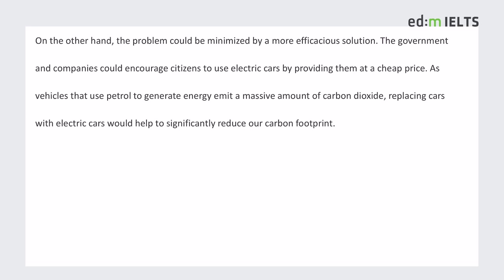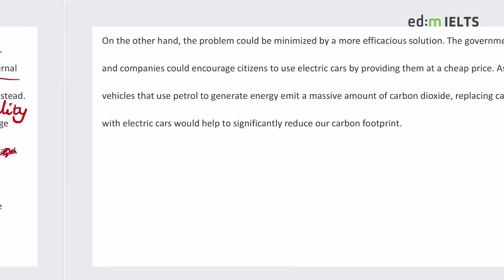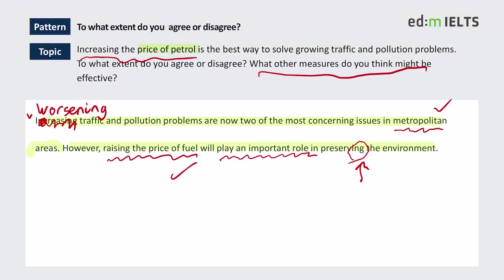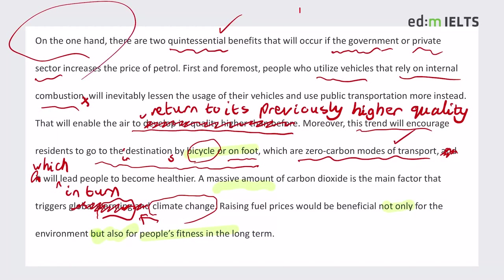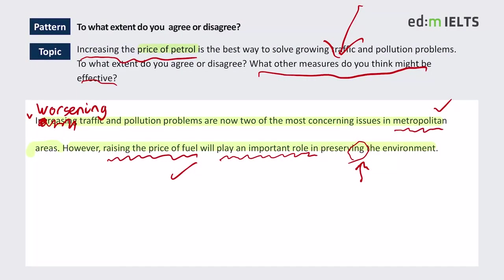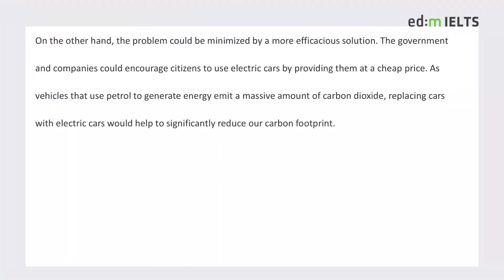On the other hand, the problem could be minimized by a more efficacious solution — so getting to the second part of the question: what other measures might be effective? 'On the one hand... on the other hand' works quite well here. On the one hand, increasing the price of petrol would be good in several ways; on the other hand, there might be a better way. 'Via' — very good word for writing. It's very flexible, formal, and fancy: a beautiful combination for IELTS writing. You can use it in lots of different ways — 'through means of,' 'through the method of.' Maybe 'mitigated' would be a slightly better word than 'minimized,' but it's close enough.